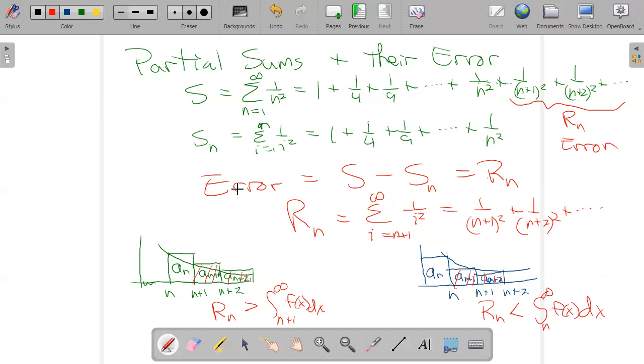So this error in calculation, which is also the remainder, lives in between them. So here's my remainder. On one side, I have the integral from N to infinity of my function. On the other side, I have the integral from N plus one to infinity of my function.